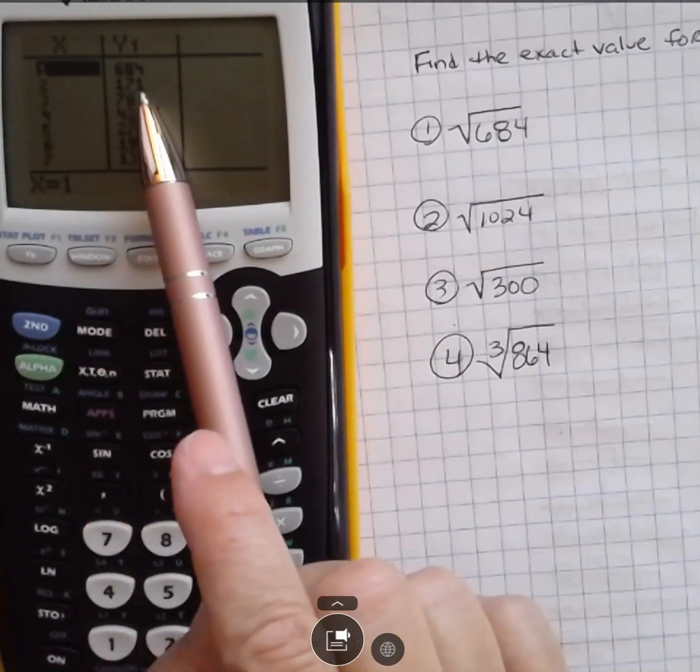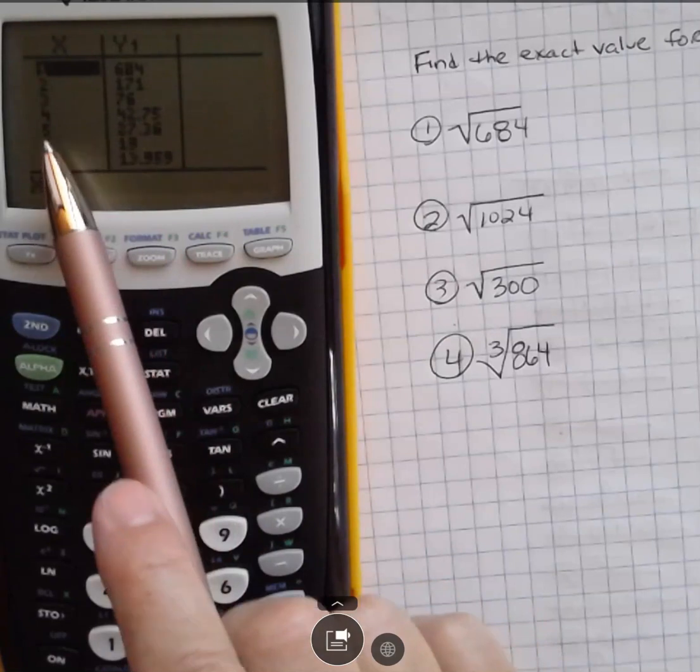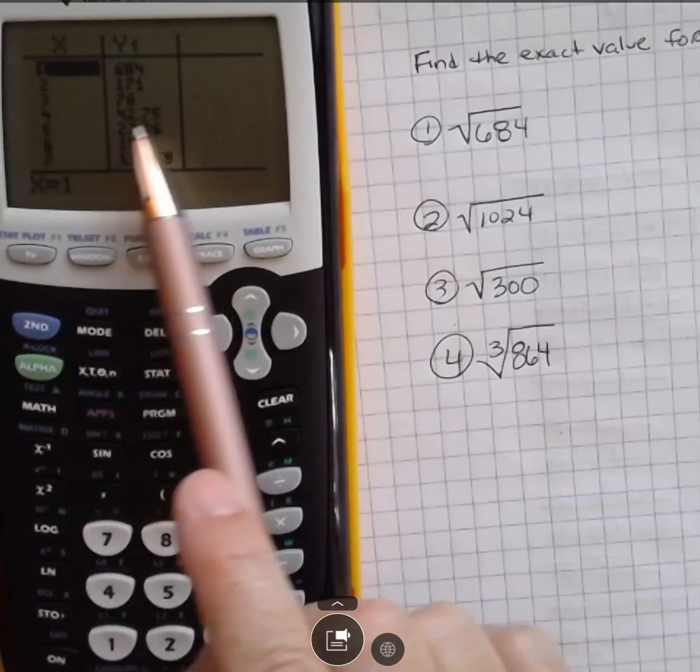If you took two squared out, you'd have 171. If you took three squared out, you'd have 76. If you took four squared out, you would not get an exact number.